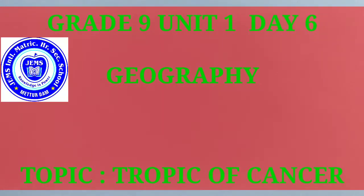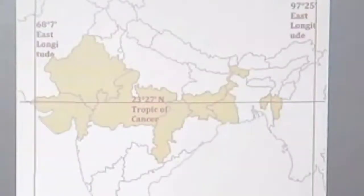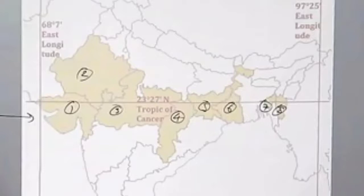Hello children, welcome to Unit One, Day Six of Geography class. Here we are going to see about the Tropic of Cancer. The Tropic of Cancer passes through eight states: one is Gujarat, two is Rajasthan, three is Madhya Pradesh, four is Chhattisgarh, five is Jharkhand, six is West Bengal, seven is Tripura, and eight is Mizoram.